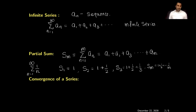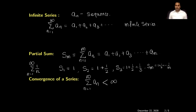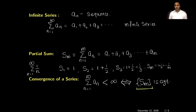Our next important definition is the convergence of a series. We say the series sum of a_n (n from 1 to infinity) is convergent — written as the sum being less than infinity — if and only if the sequence of partial sums S_m is convergent. Therefore, the partial sum sequence is very important: to show a series is convergent, we need to show that this sequence is convergent.